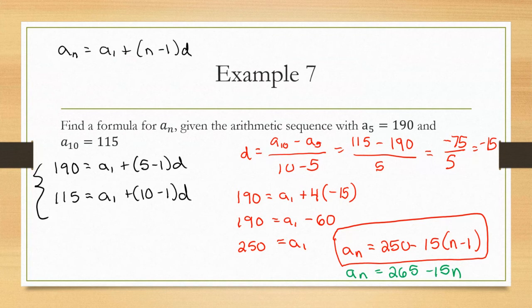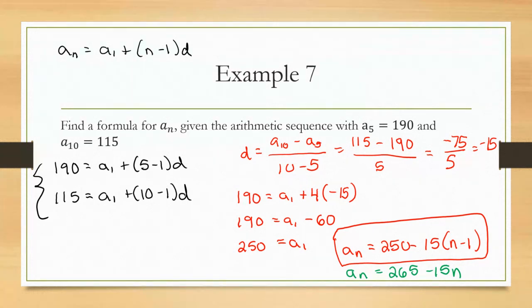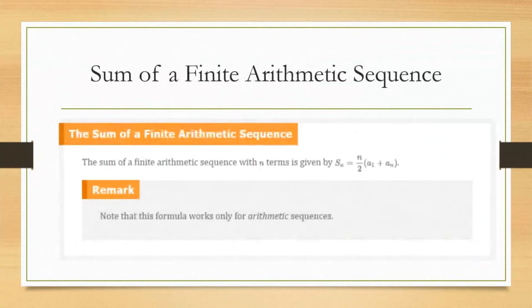That's all about using the formula to generate values in the sequence. Whatever you plug in for n generates a value — if you want the 1,000th term, plug in 1,000. These are individual sequence values, not sums. To find the sum of a sequence, we sum a finite sequence — one with an ending point — because an infinite sequence cannot be added up. The sum of a finite arithmetic sequence uses the formula S_n = (n/2)(a_1 + a_n).